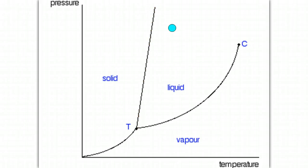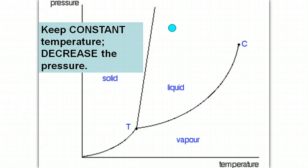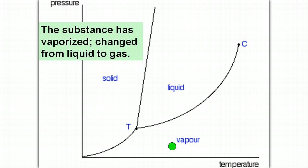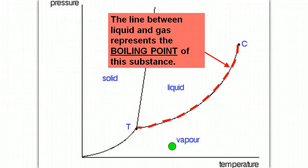So if we have our substance as a liquid and we keep the temperature constant but decrease the pressure, then that's going to cause our liquid to change to a gas. So it's vaporized, change from a liquid to a gas. When you change from liquid to gas, vaporization is what occurs.